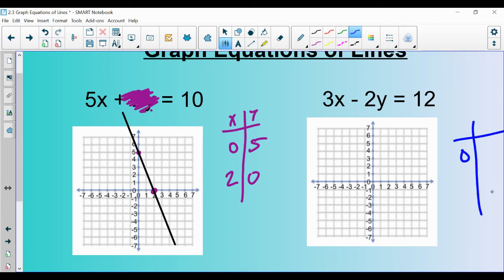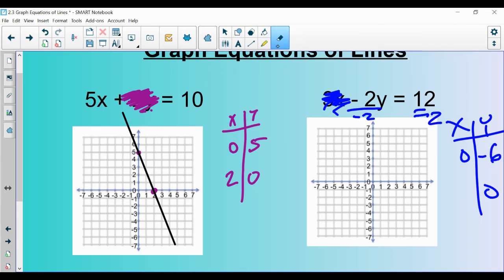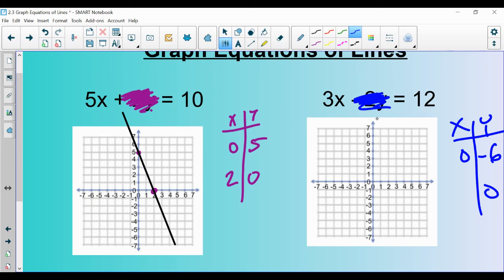Go ahead and pause it here and try this one. First, you would plug in 0 for x. That makes this go away. Now we have -2y=12. Divide both sides by negative 2 and you get negative 6. Now we'll plug in 0 for y. Plugging in 0 for y makes this one go away. Divide by 3, divide by 3, I get 4. (0,-6) is there, and (4,0) is there. And there's the graph.